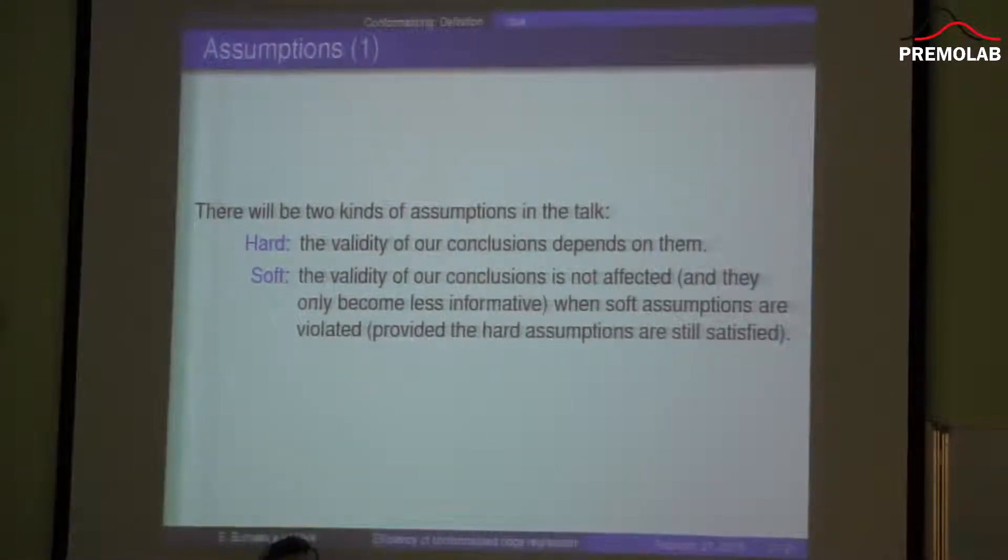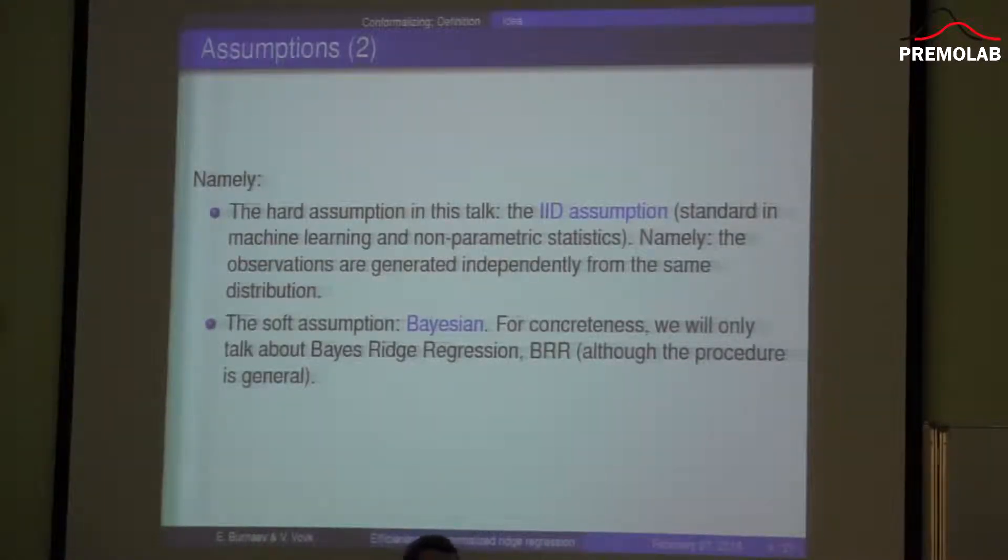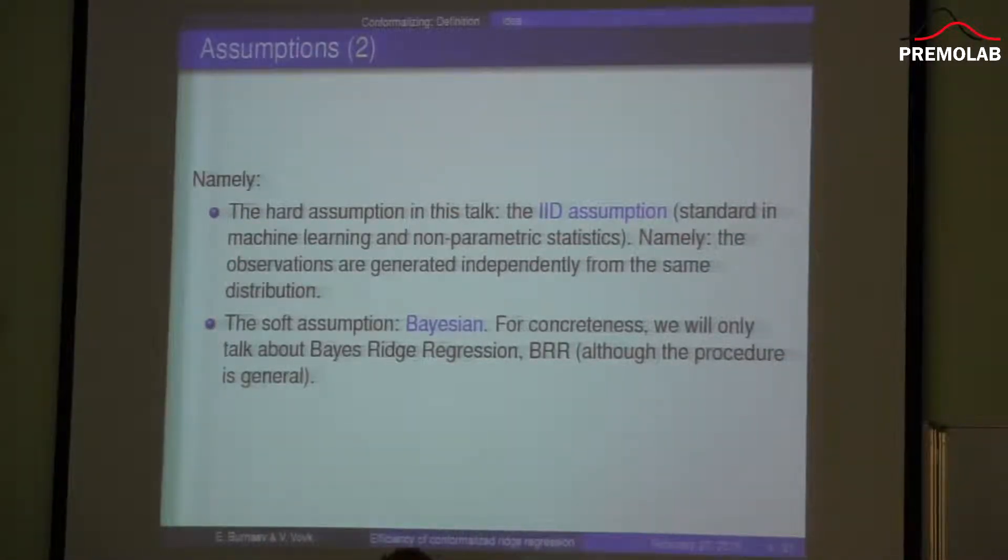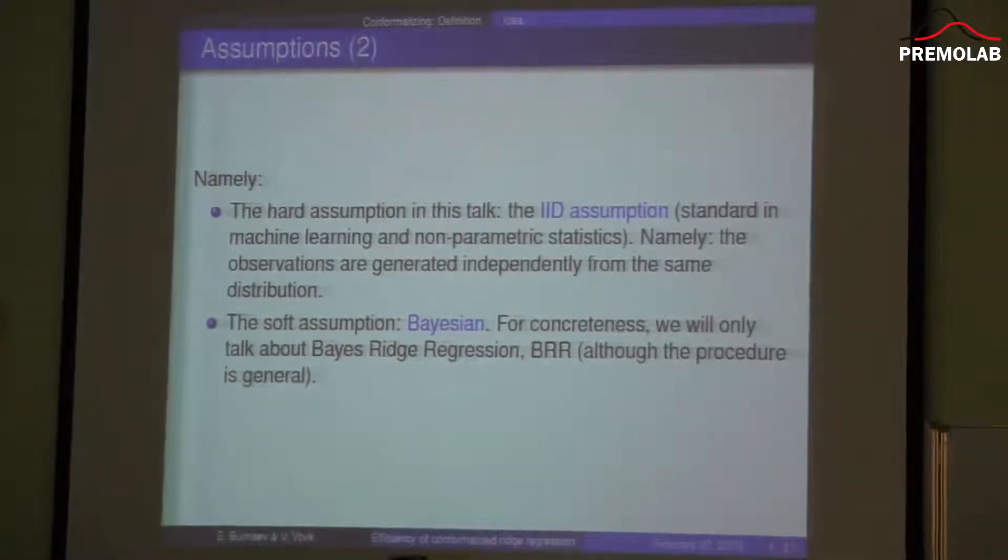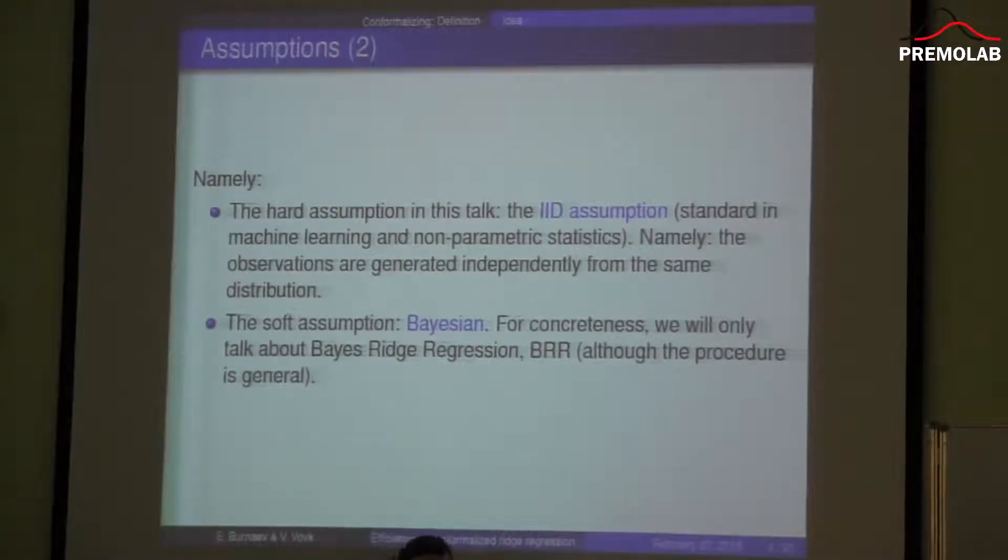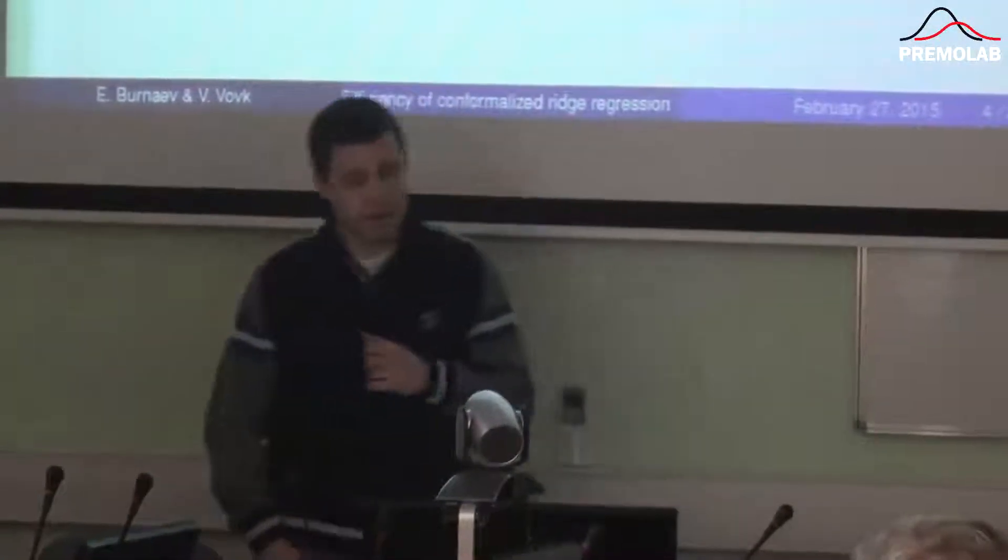In order to overcome these difficulties, in this talk I will tell you how to make Bayesian conclusions more robust in some sense. In particular, how to conformalize these conclusions and how much do we have to pay for this. In my work there will be two assumptions. One is hard, another is soft. We will talk only about Bayesian ridge regression, although the analogous results are already derived for Bayesian kernel ridge regression and some other algorithms.